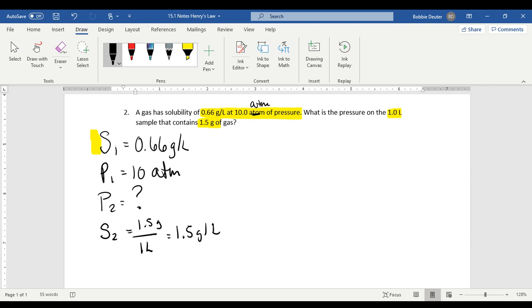So if we set this up, S1 divided by P1 is equal to S2 divided by P2, we would get 0.66 grams per liter over 10 ATMs, which is equal to 1.5 grams per liter over X, X being 22.7 ATMs.